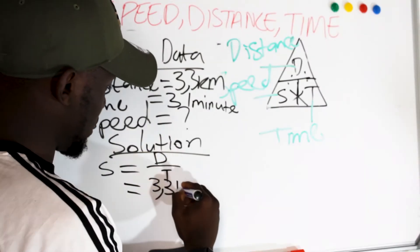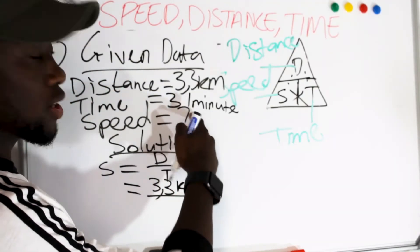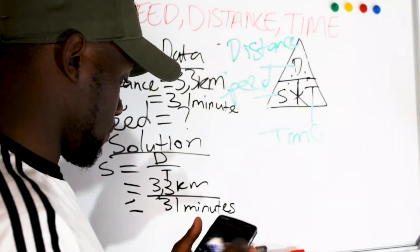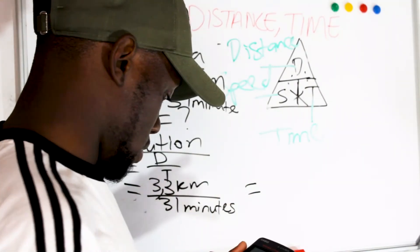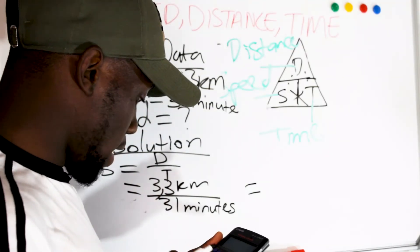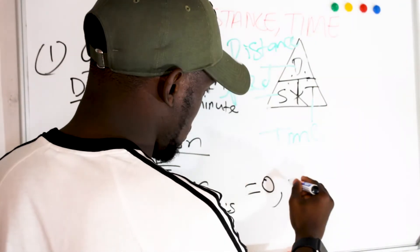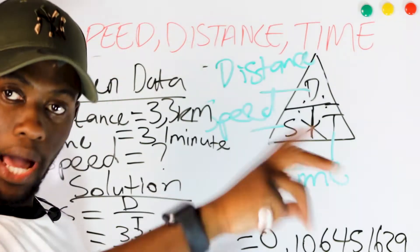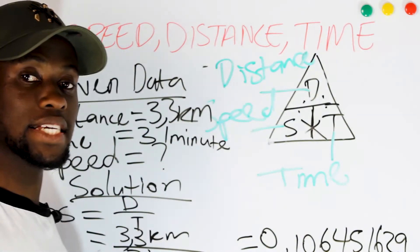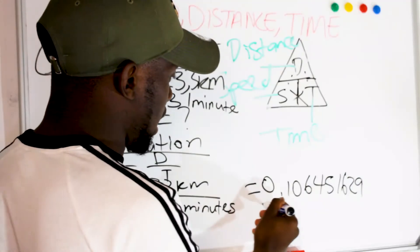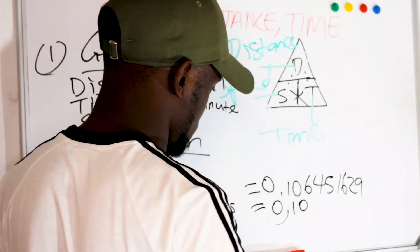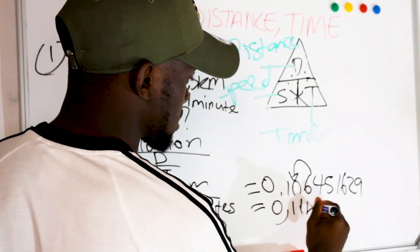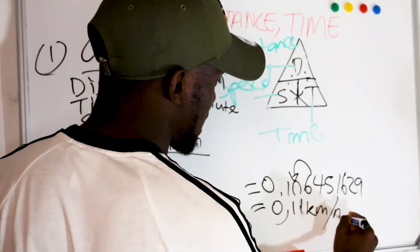So speed equals 3.3 kilometers divided by 31 minutes. The answer is 0.106451629. We round off to two decimal places — unless stated otherwise to 3 or 1 decimal place — giving us 0.11. Since we used kilometers and minutes, the unit is kilometers per minute.